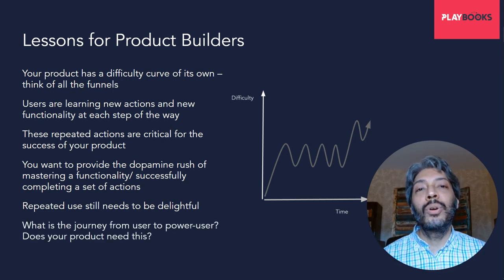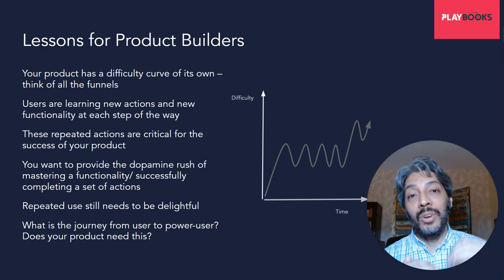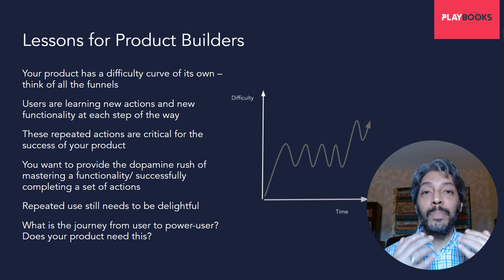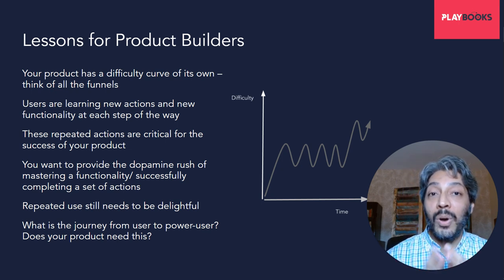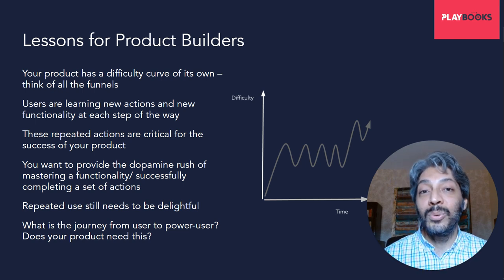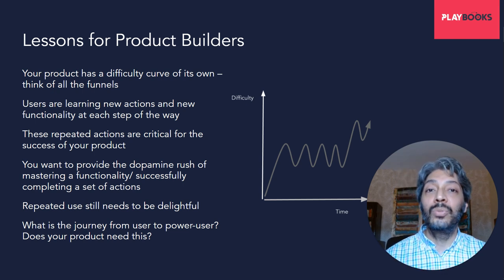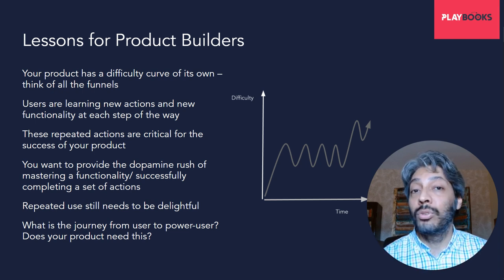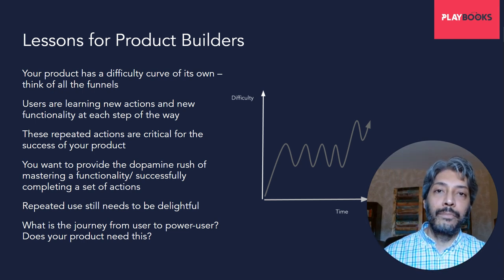What is the journey from user to power user? Regular products don't have an endlessly upward rising difficulty curve. At some point your difficulty curve stagnates — and that's when your power users need more. That's when you've found product-market fit, but you're now looking for more difficulty curves to give your users. There are more hills to climb, more local maximas, more bosses to vanquish. This is where you add more functionality to your product — it's a great signal that many users have found value in your product and have mastered its usage.